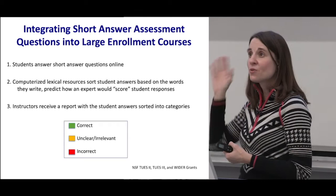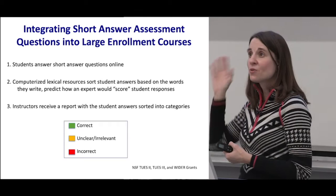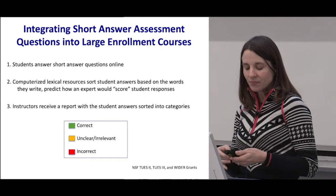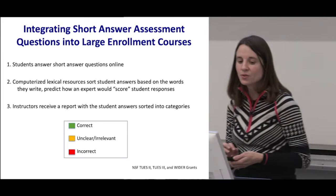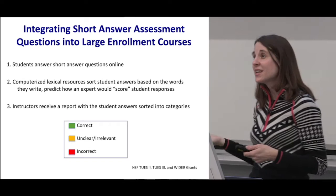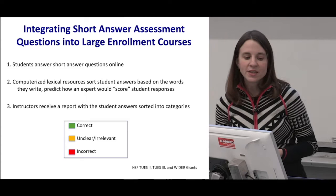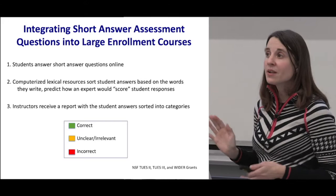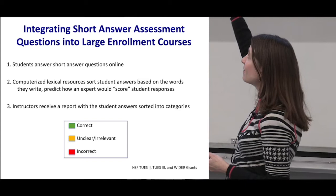The way this project worked is that students were presented with a short answer question online. They would log on, answer that question, and then computerized lexical resources would sort student answers based on their word choices. The lexical resources would predict how an expert or the instructor in the class would score them. Instructors would then receive a report with the students' answers sorted into categories — generally the bins were correct, unclear, irrelevant, or incorrect.